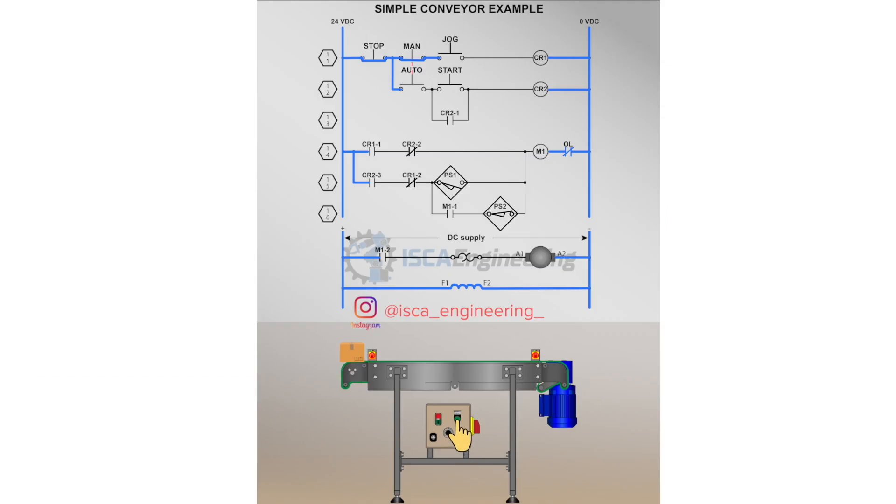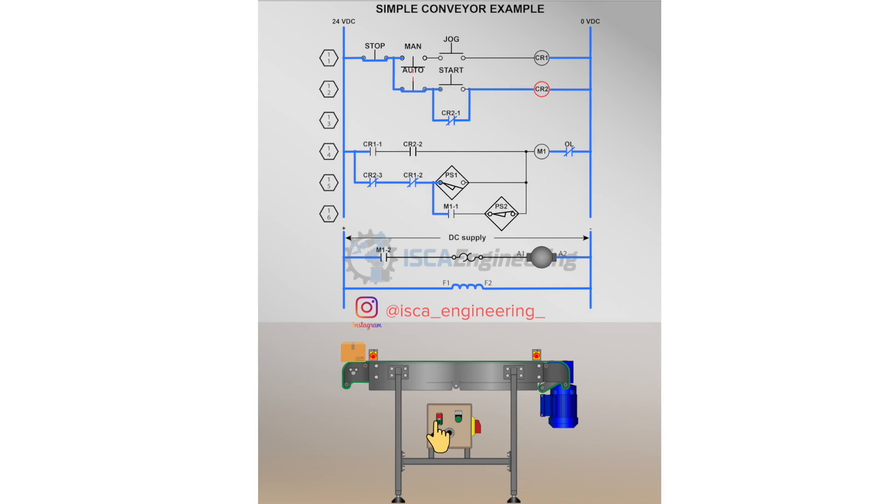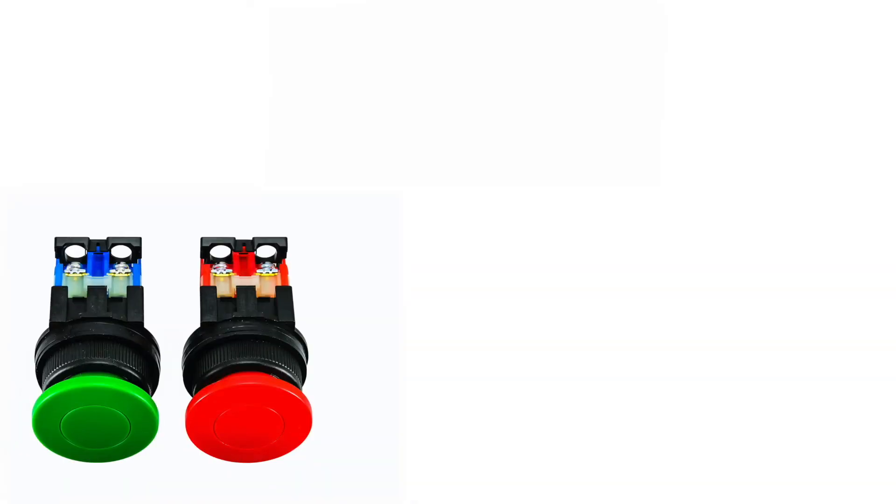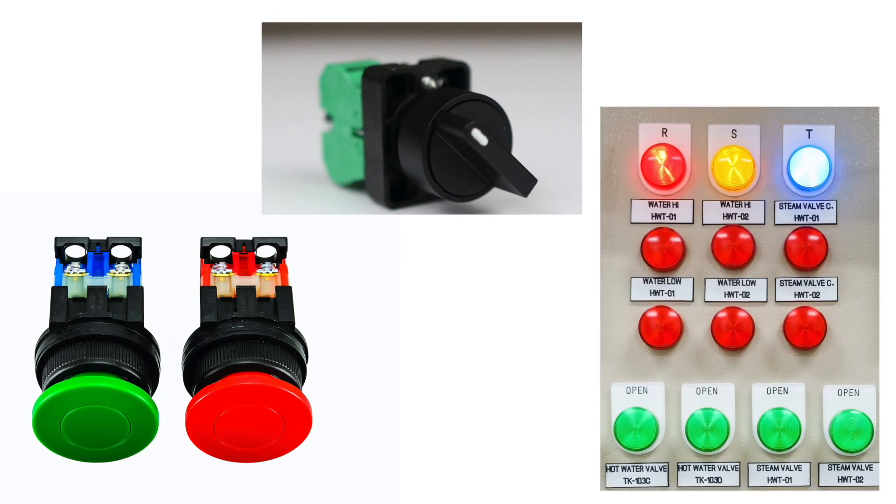A control device is a component used to turn on or off current flow in an electrical circuit. Some of these control devices include push buttons, switches, and pilot lights also known as indicator lights. We'll cover these control devices as well as mention and review a few more in our next video.